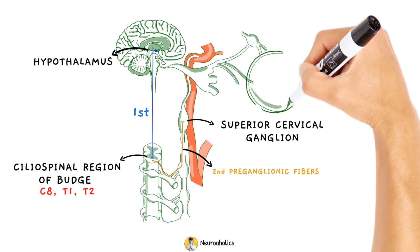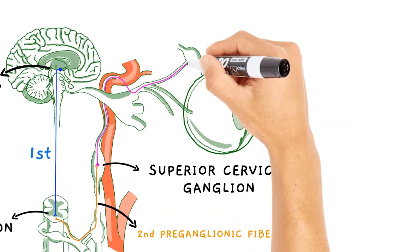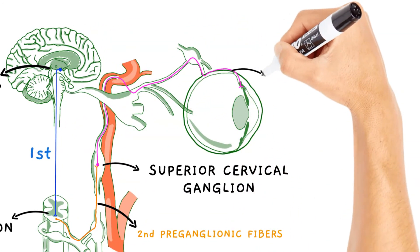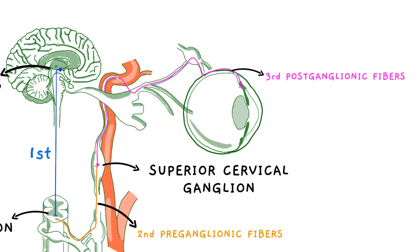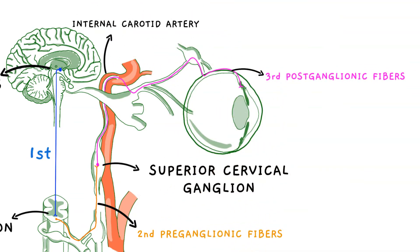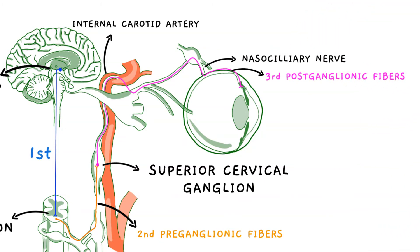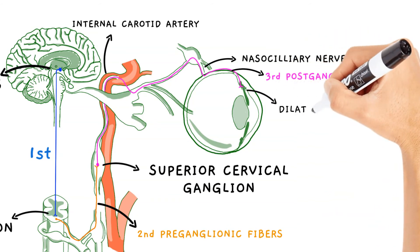Postganglionic neurons from the superior cervical ganglion give rise to third-order neurons. They enter the skull by ascending along the sympathetic plexus and circumnavigating the internal carotid artery. Around the ophthalmic artery, the fibers join the sympathetic plexus. Then they travel to the nasociliary nerve, a branch of the trigeminal nerve's ophthalmic division, and pass through the ciliary ganglion. They do not synapse in the ciliary ganglion and travel through the long ciliary nerves to the dilator pupillae.